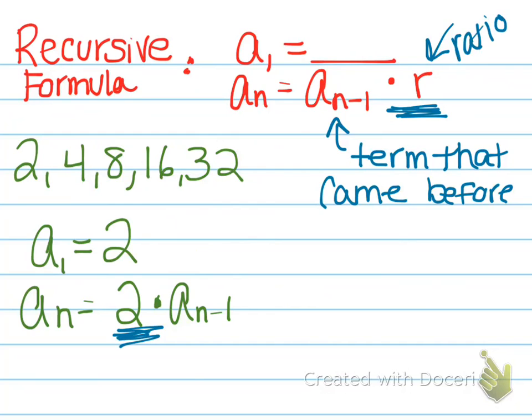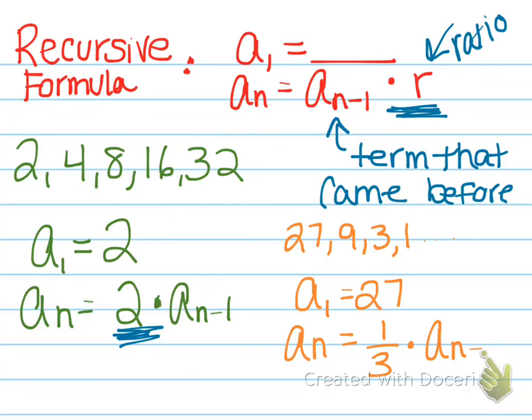And then that second example where we had 27, 9, 3, and 1, that's going to be a sub 1 which is 27, our first term, a sub n equal to 1 over 3 our ratio times a sub n minus 1, the term that came before.